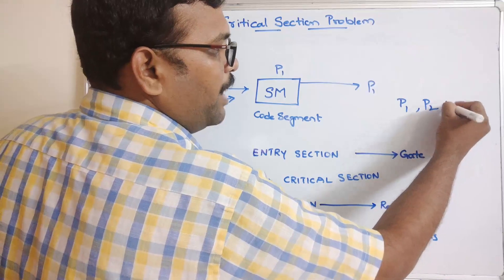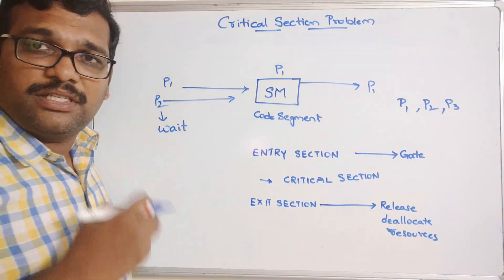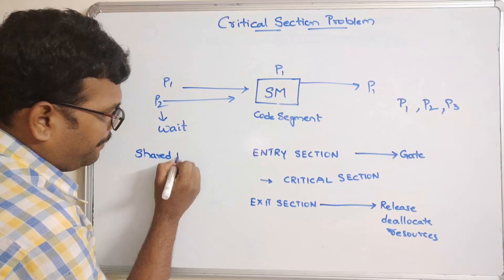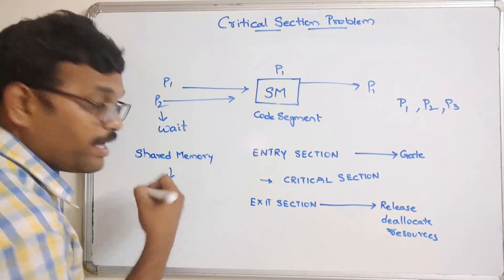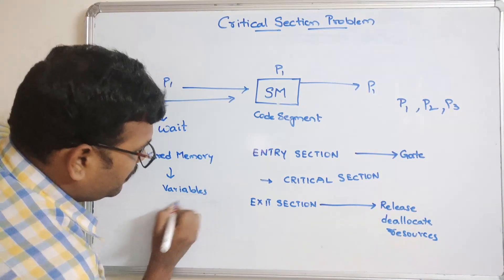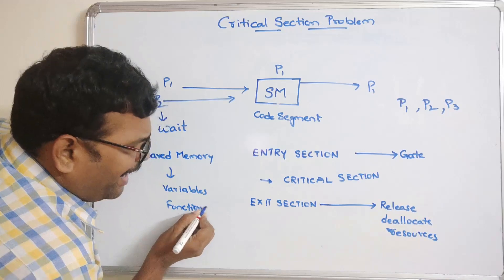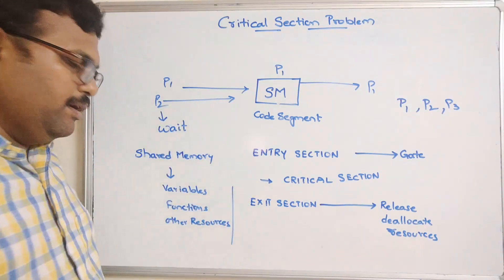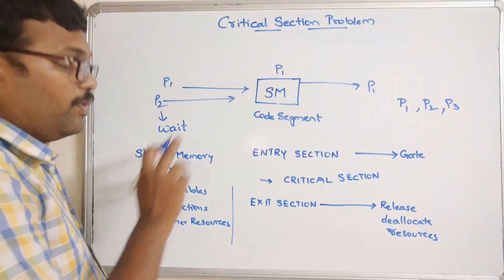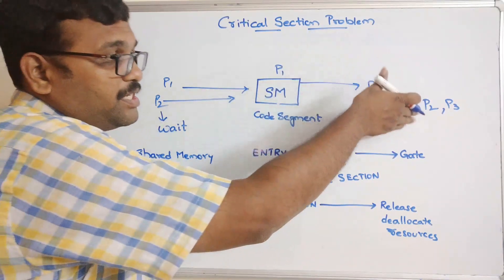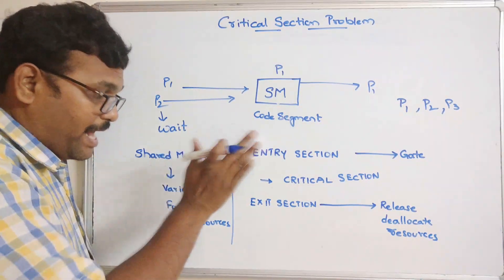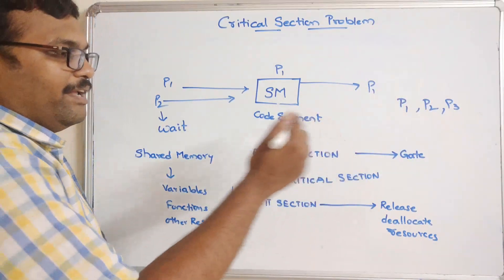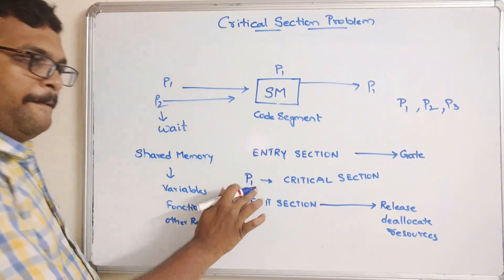For example, take three processes P1, P2, and P3 that need to be executed. There is a shared memory which can contain variables, functions, and any other resources — all common to all the processes. If all processes want to execute, they can access this shared memory — either variables, functions, or other resources. So if P1 enters the critical section, P2 and P3 will be in a waiting state.